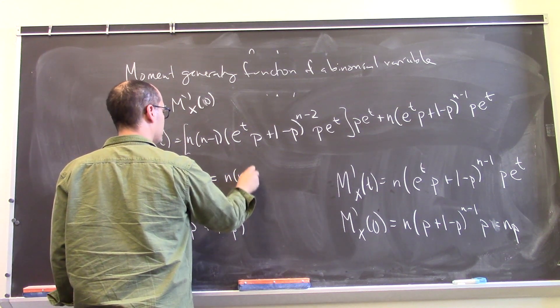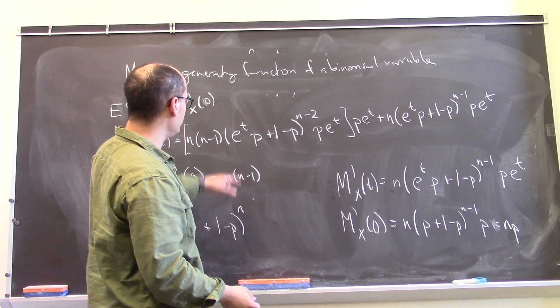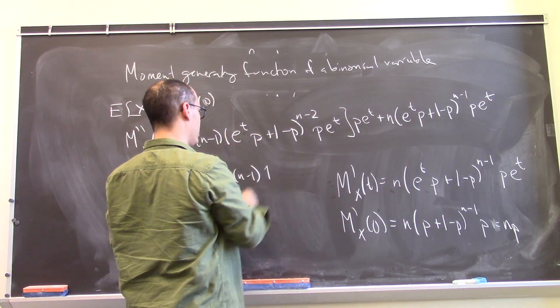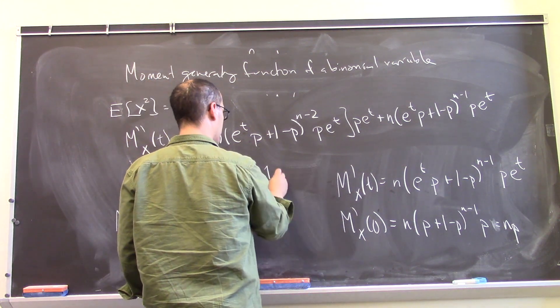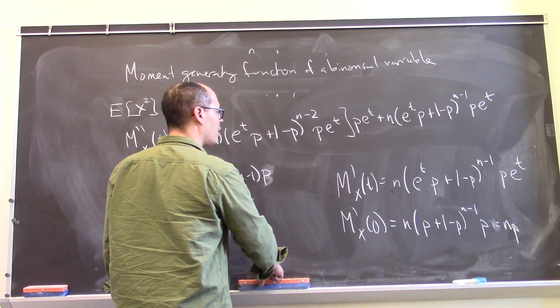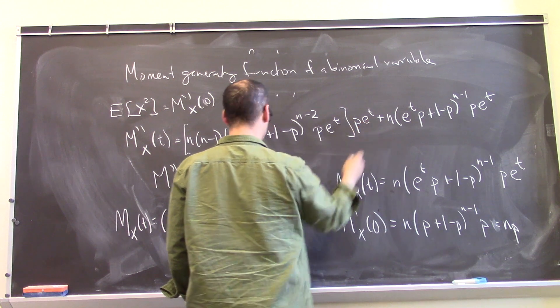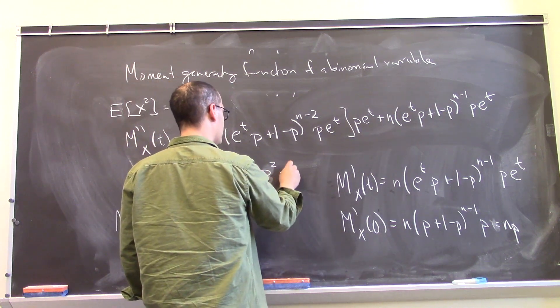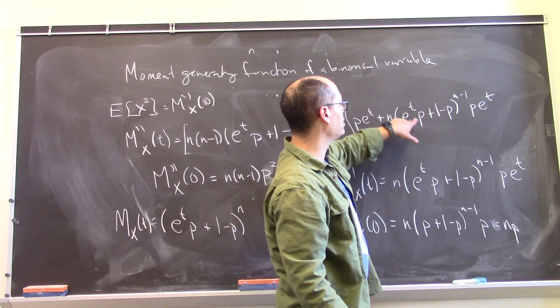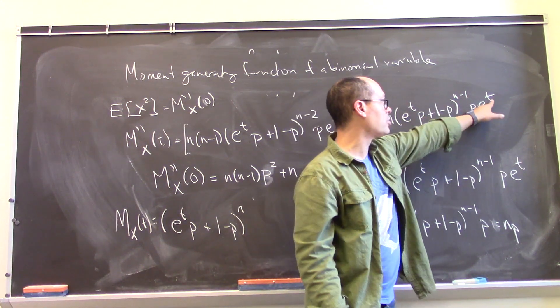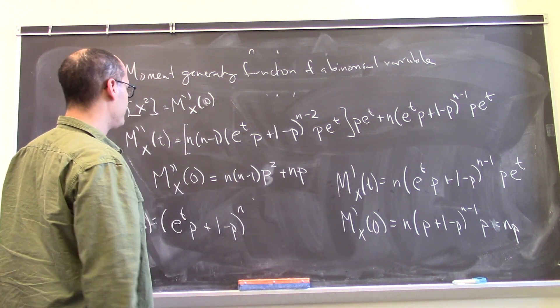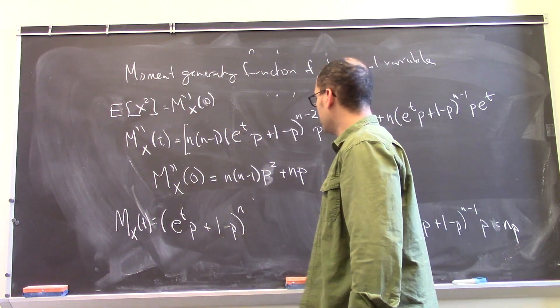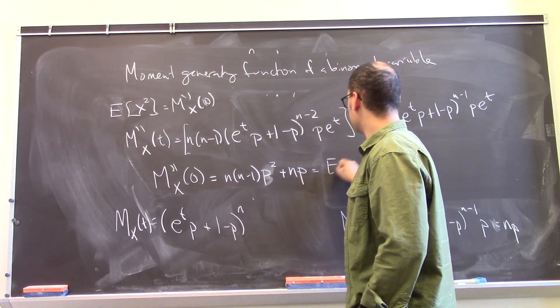And what do we get? n times n minus 1. As before, you can see this thing is going to be e to the 0. I'm going to get p and 1 minus p. I just get a 1. Just 1 to the whatever is still just 1. And now I have times a p. I have a p here. The e to the t again is 0. Then I get another p, e to the t. So that's a p squared. That's e to the 0 again. Now this next term, again n. Again, this term, if I plug in t equals 0, this whole term is 1. So I just get p. So what have we just learned? We have learned that this is the expected value of X squared.